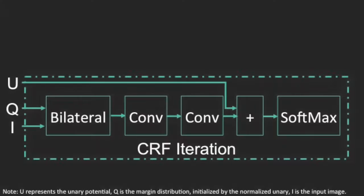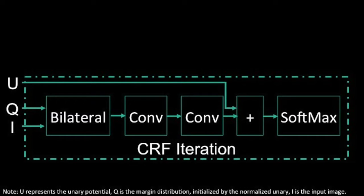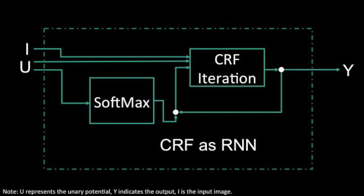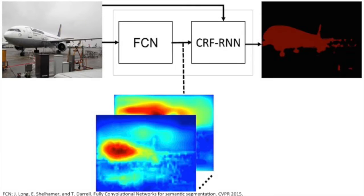In order to harness the capability of deep learning to delineate visual objects, we formulate mean field approximate inference for conditional random fields with Gaussian pairwise potentials as recurrent neural networks. Our network, called CRF-RNN,